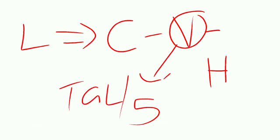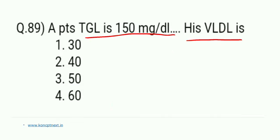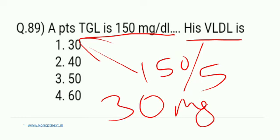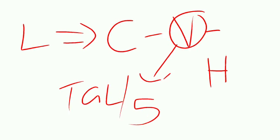This patient's triglyceride is 150, so 150 divided by 5 is 30 mg per deciliter. So his VLDL is 30 mg per deciliter.